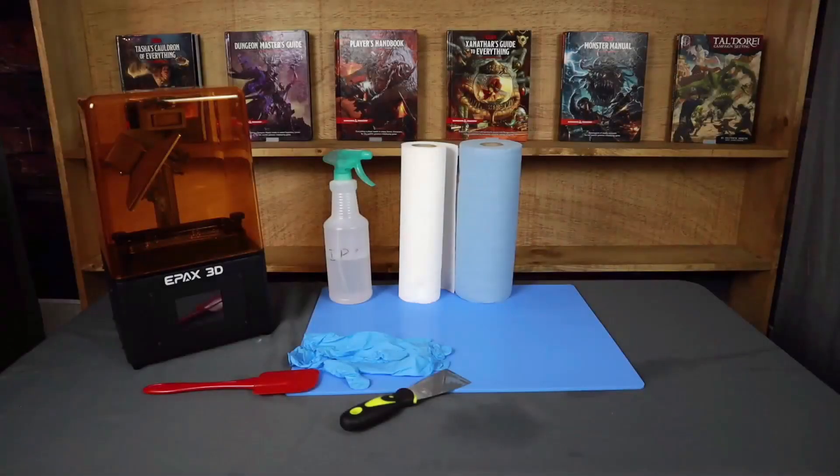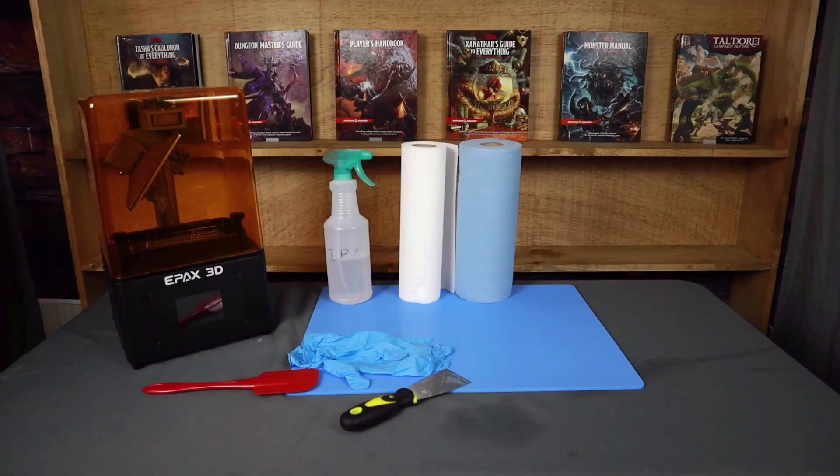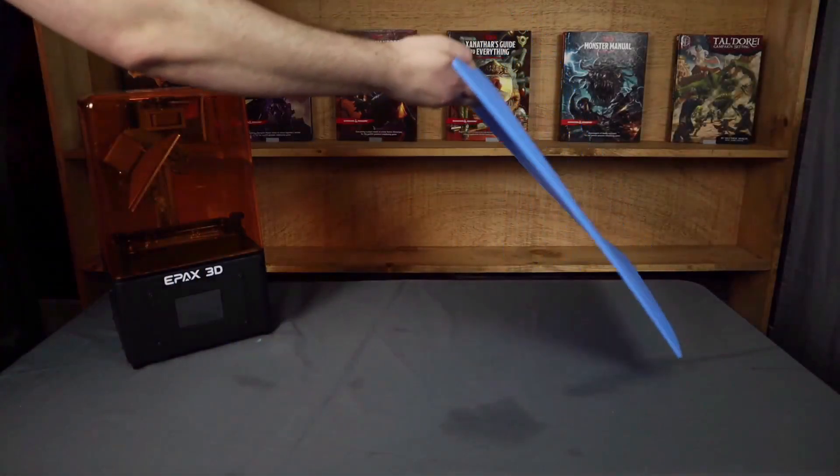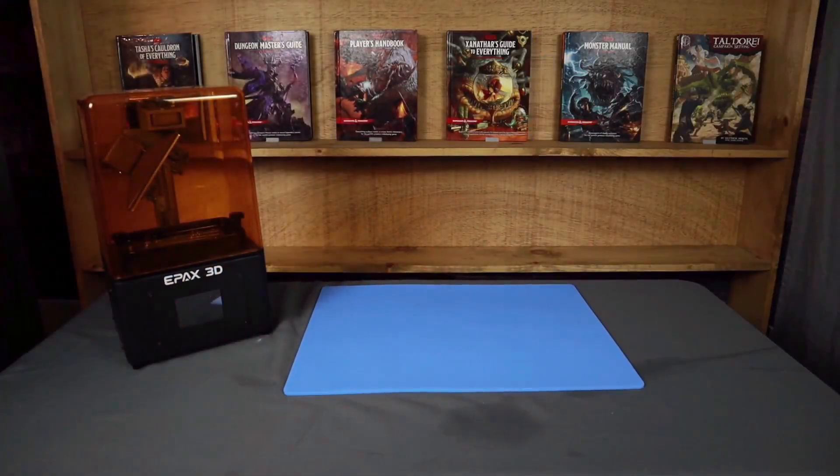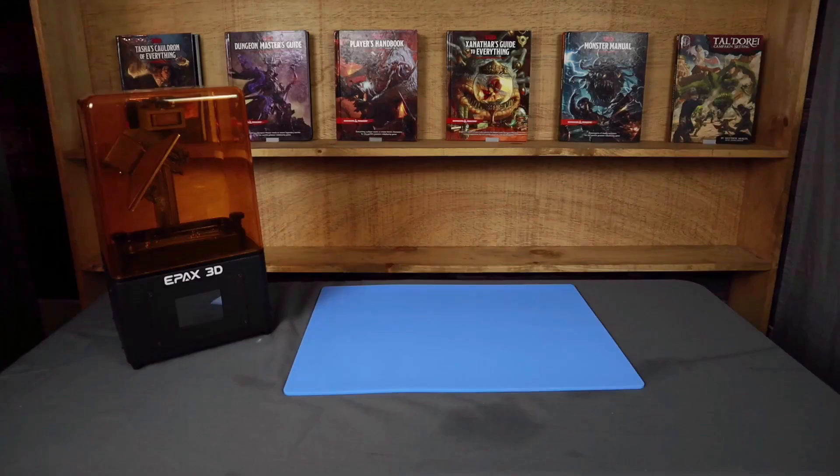Before we jump into the video, I want to go over the tools that I'll be using for this process, and I do recommend you pick up anything you see here that you don't have on hand. You can find all of this stuff in a kit link that I have down below. First up is going to be either a silicon mat like this or a plastic tablecloth, just something that you can put under your workspace to make it easier to clean up any drips or spills of resin.